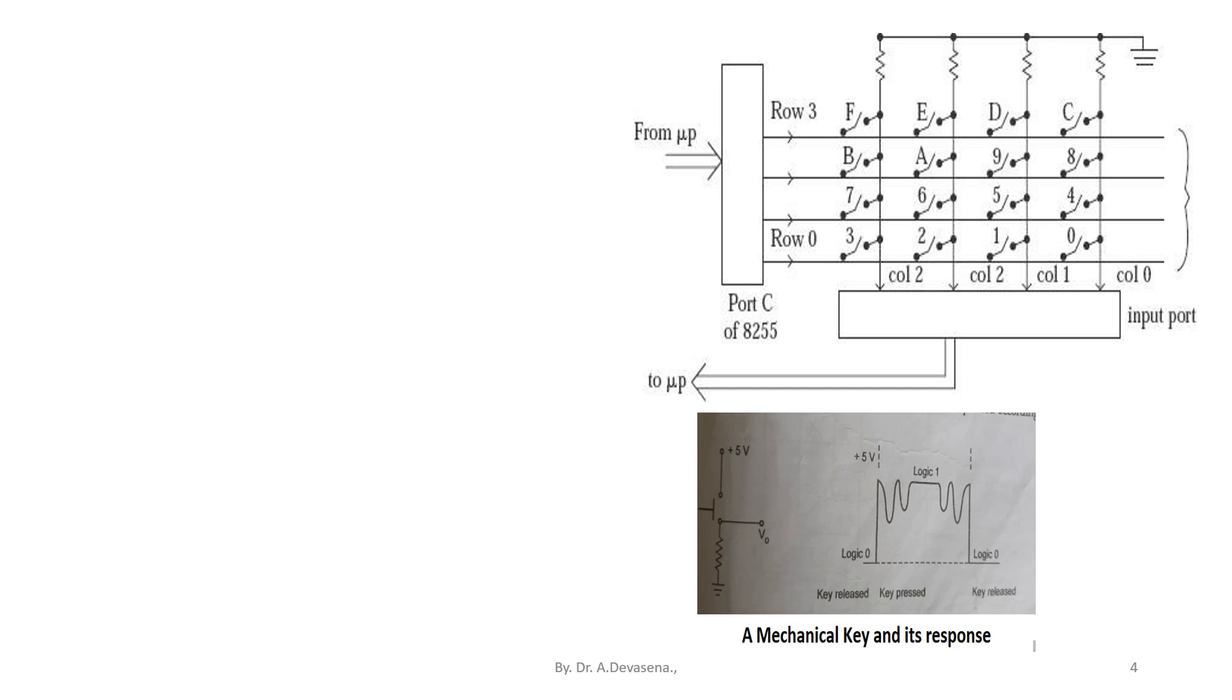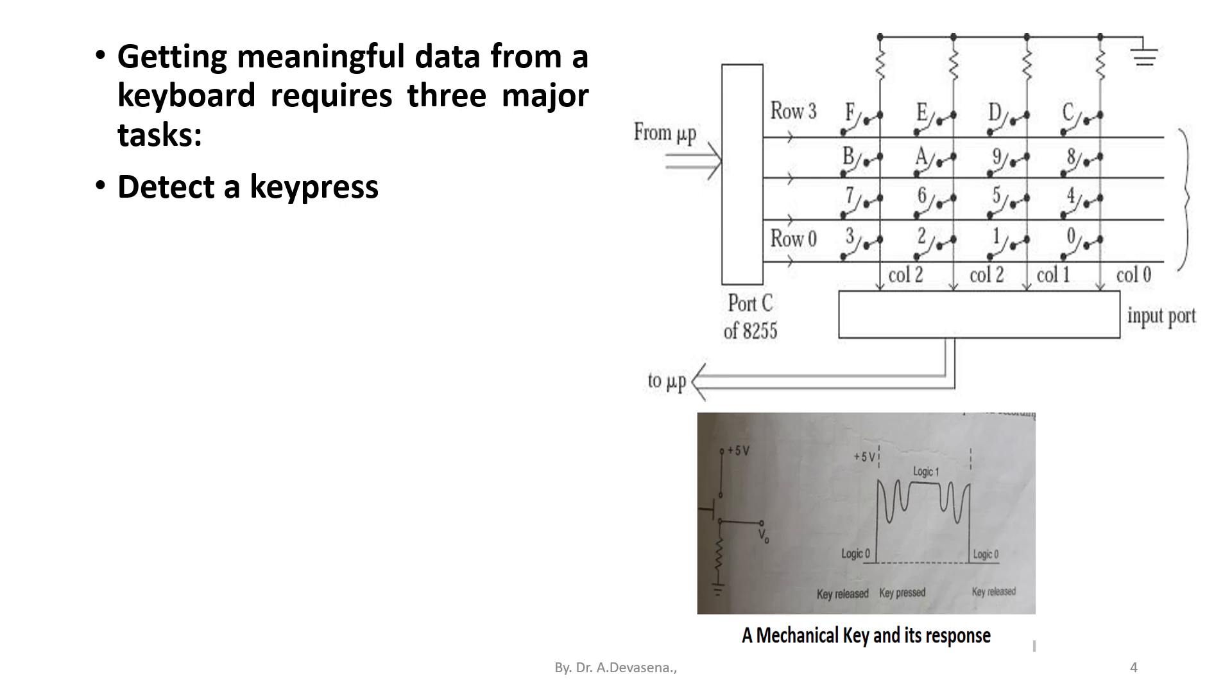Getting meaningful data from a keyboard requires three major tasks. The first task is detect a key press. The second task is debounce the key press. The third task is encode the key press, that is, produce a standard code for the pressed key.